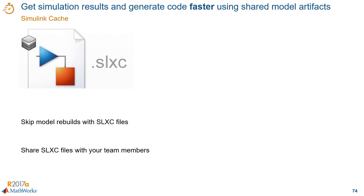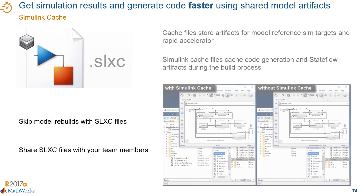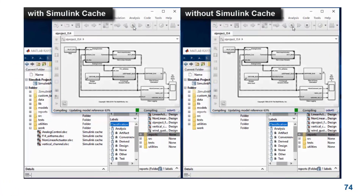Another way to speed up simulations and code generation is with Simulink cache files. These cache files are auto-generated during model update, and you can share them across teams to skip model rebuilds. Let's see a comparison.